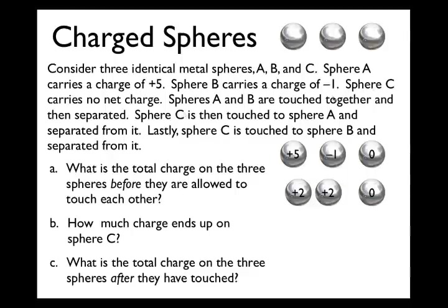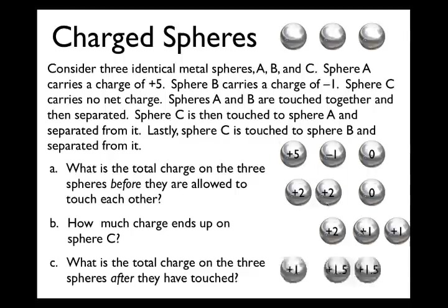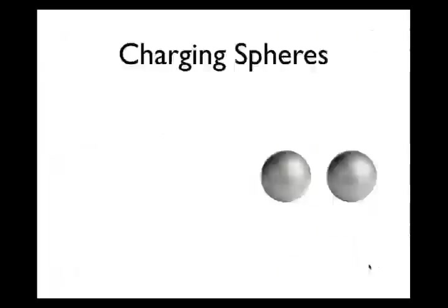I then bring sphere C into contact with sphere A and separate it. A has +2, C has zero — that's a total of +2 between them — so +1 transfers to C and +1 remains on A. Now I have A = +1, B = +2, C = +1. Finally, touching sphere C to sphere B: between them they have +3, which equally distributes to +1.5 on each. The total charge on all three spheres after touching is +1.5 + 1.5 + 1 = +4, which is the same as before — a good check that we've done this correctly and that charge was conserved.